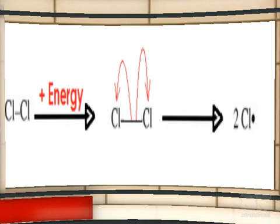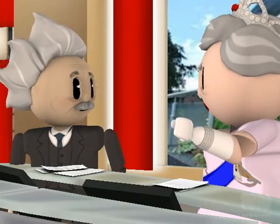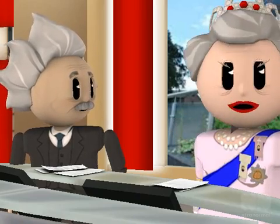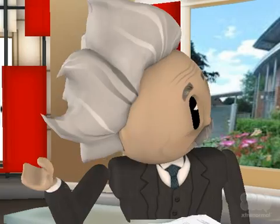There is a mistake in that diagram — there are two double-headed arrows, which we'll discuss later. When the bond undergoes lysis, or breakage, each atom ends up the same — each with an unpaired electron, hence the prefix 'homo.'